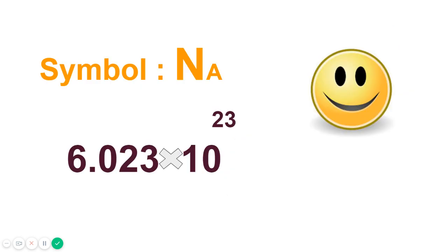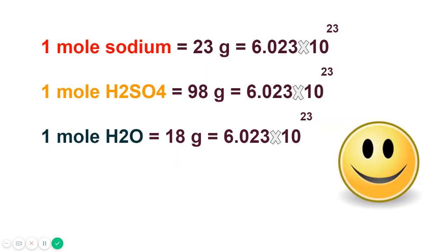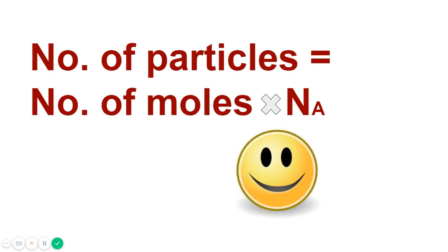The number of particles present in one mole of a substance is Avogadro's number, 6.02 × 10²³, symbolized as Nₐ. One mole of sodium is 23 grams, one mole of sulfuric acid is 98 grams, and one mole of water is 18 grams — but all contain the same number of particles, Avogadro's number. You can determine the number of particles by the formula: number of particles = number of moles × Avogadro's number.